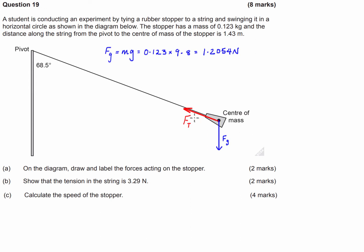So now we need a force of tension along the string that creates a vertical component equal and opposite to the force of gravity we just calculated. I'm going to draw a little force triangle here. The tension acts along the string, and the vertical side of this triangle has to be equal and opposite to the force of gravity — acting upwards. We know that this angle is going to be 68.5 degrees.